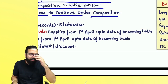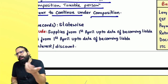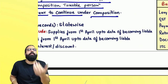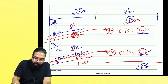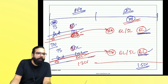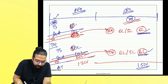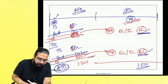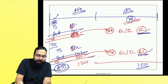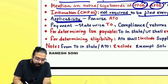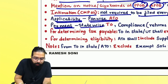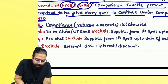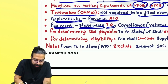CMP-02 is not required to be filed every year to continue under composition. If you have once taken composition by filing CMP-02, every year you will remain under composition unless you become ineligible or you opt out. When checking whether composition scheme is allowed, always check aggregate turnover on a pan-wise basis. But when making the payment, it is always state-wise turnover. Compliances, returns, and records are always state-wise.